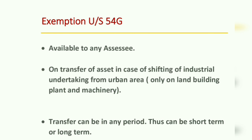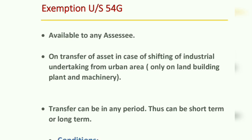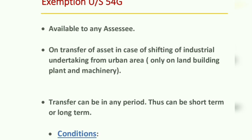The exemption under Section 54G applies only on land, building, plant and machinery. When we are shifting from an urban area to a non-urban or rural area, we receive the benefit on transfer of these assets. If furniture is also transferred, the exemption benefit cannot be availed on purchase of furniture — this benefit is for those four assets only.